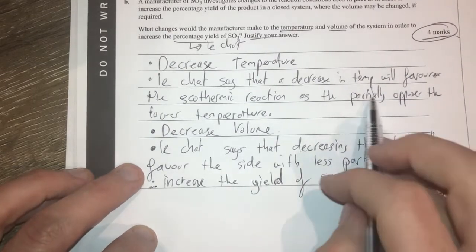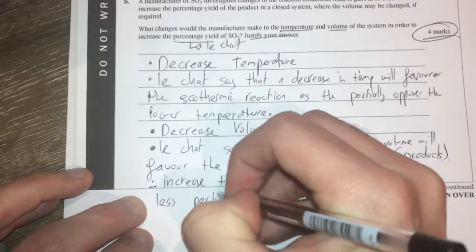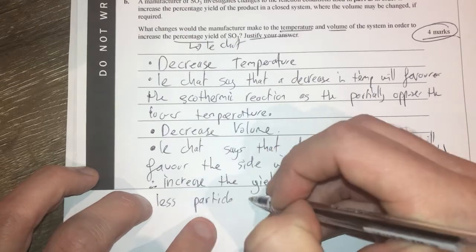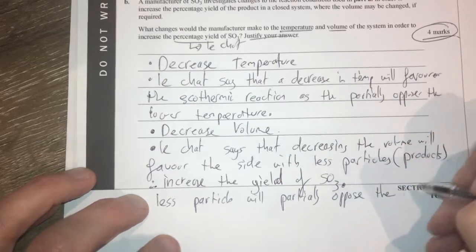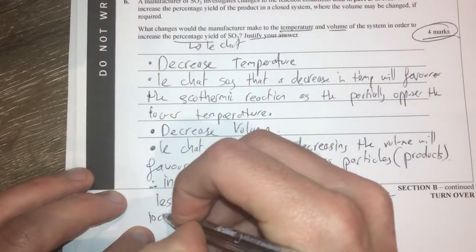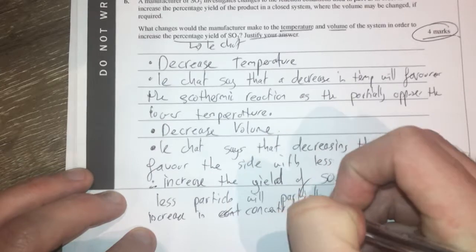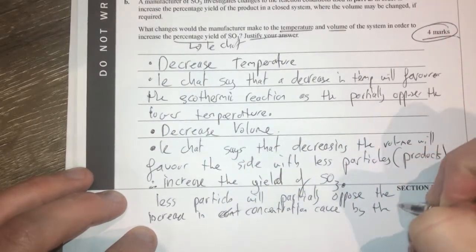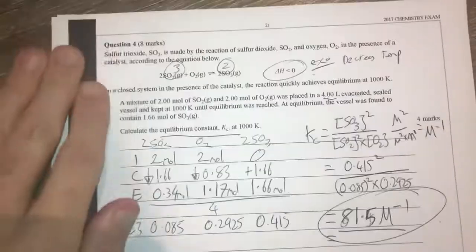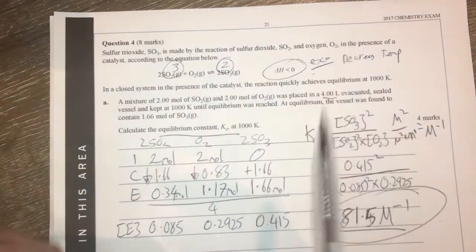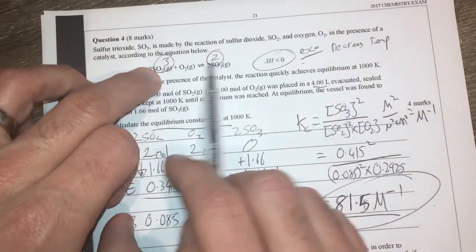Probably in here, probably should talk about something about partially opposing as well. So increase that. The less particles will partially oppose the increase in concentration caused by the decrease in volume. By decreasing the volume, you increase all the concentrations of everything. So therefore, Le Chat says we're going to try and partially oppose that increase in all concentrations by trying to get less particles, which is why we're going to favor that side there.